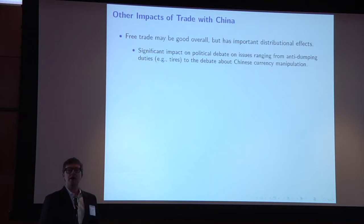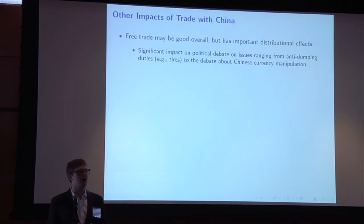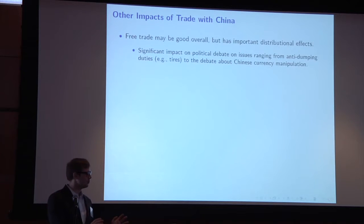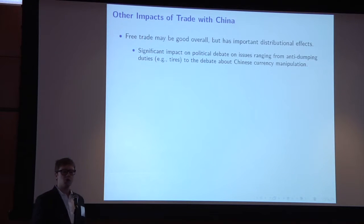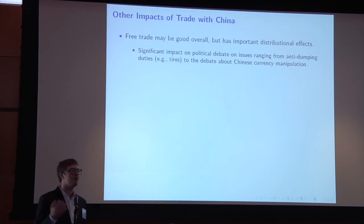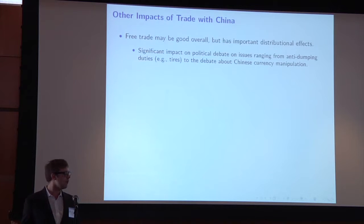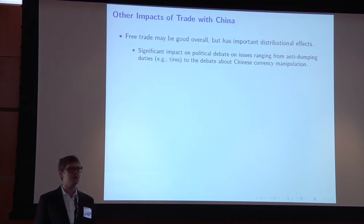The last thing I want to focus on is the broader impacts of import penetration and increasing trade. What this paper has shown pretty convincingly is that while free trade may be good overall — and the paper takes no stance on that — there are very important distributional consequences in particular in terms of job displacement within the US. You see the impact of those distributional consequences showing up all along the political debate — anti-dumping duties on Chinese tires, debates about Chinese currency manipulation. If you overlaid that political support with the map showing the regions most hit by import penetration, I wouldn't be surprised to see a pretty sizeable correlation.